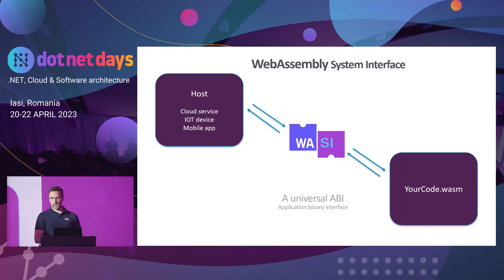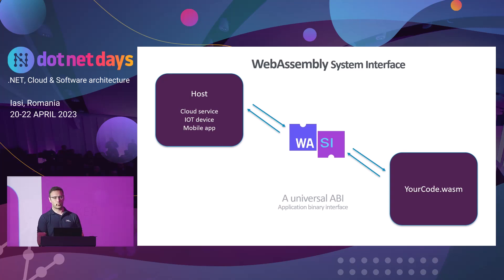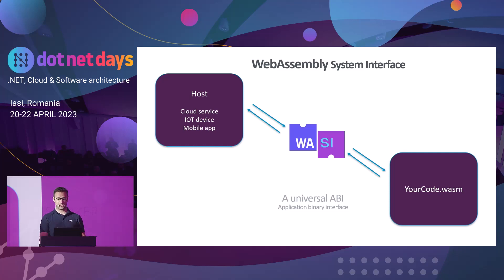One way to think about WebAssembly is like an application binary interface - sort of like a contract between a host and your code. The host can be any cloud service, Kubernetes, or just an app service running in Azure. It can be an IoT device running at the edge of the cloud, a mobile app, a Windows app - anything really. And your code, compiled to WASM, can be any programming language that is compilable to WASM, because WASM - or WebAssembly, the same thing - is also a compilation target for various programming languages like C++, C#, Java, Go, Rust. These are the favorites.